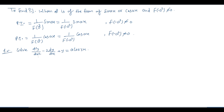Example: d²y/dx² − 2(dy/dx) + y = a·cos(3x). इसे symbolic form में लिखते हैं: (D² − 2D + 1)y = a·cos(3x).